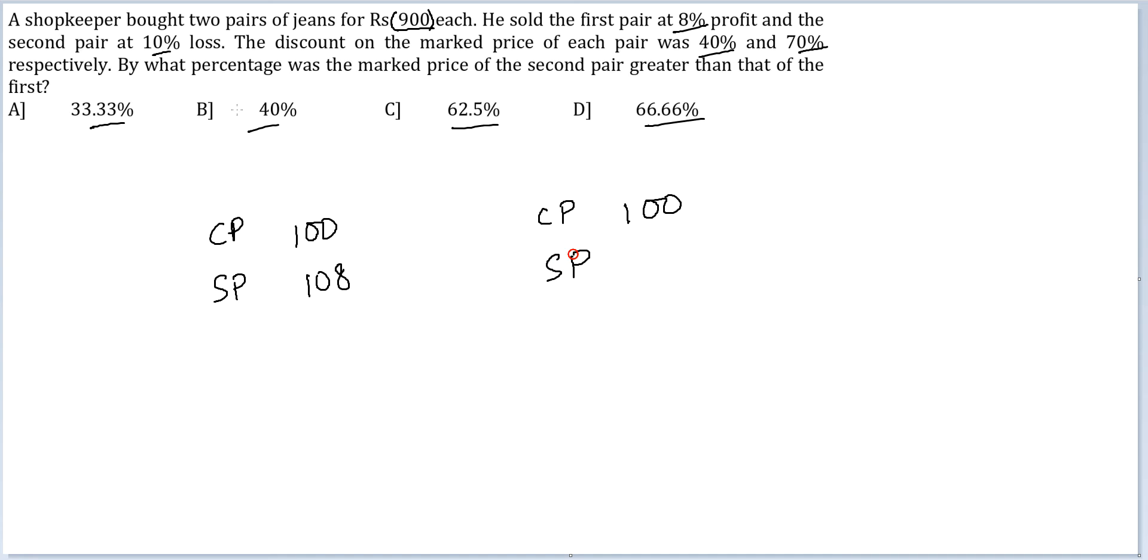In the second case his selling price, because he is suffering a 10% loss, will be 90 Rs.90. The discount on the market price of each pair was 40%. So this SP is 60% of MP. Using this you can find out market price is equal to 180.